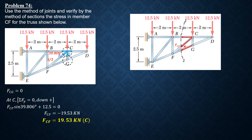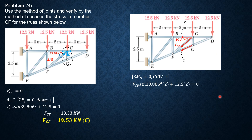Summing up moments about D considering all forces to the right of the section, only FCF and the 12.5 kilonewtons are involved, since the 12.5 kN acts at D with zero moment arm for the other members. The horizontal component of FCF passes through D, so only the vertical component contributes to the moment.